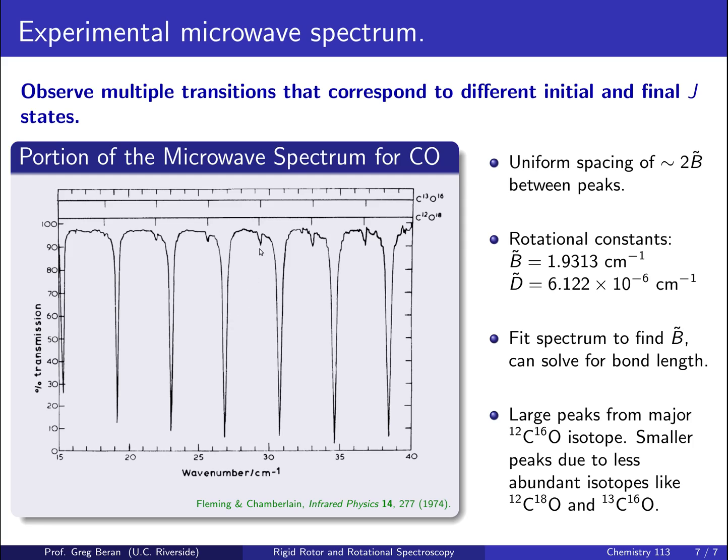So, you could go ahead and fit B to the spectrum and solve for the bond length of CO. Other interesting features you'll notice is there are these smaller peaks here. These correspond to peaks from minor isotopes. So, the major isotope and the main peaks on the spectrum are from the carbon-12, oxygen-16 isotopomer. However, we also have oxygen-18 isotopes and carbon-13 isotopes, and these smaller peaks correspond to rotational spectra from those less common isotopes. Because they're less abundant, they occur more weakly in the spectrum.